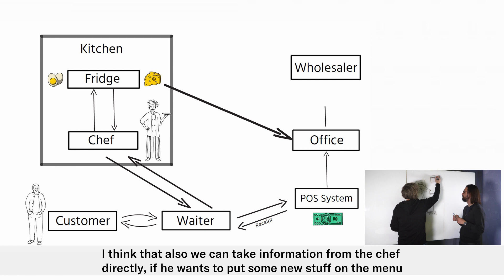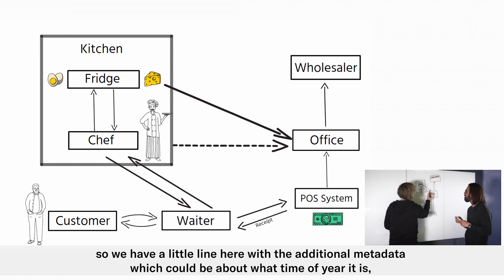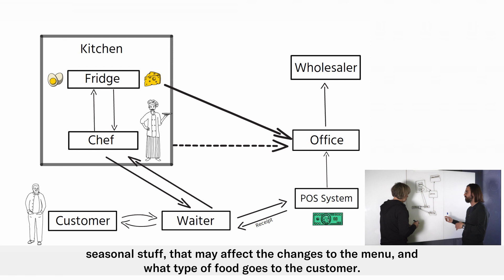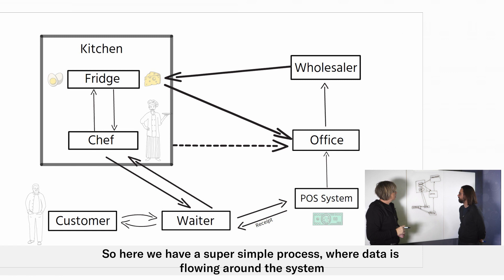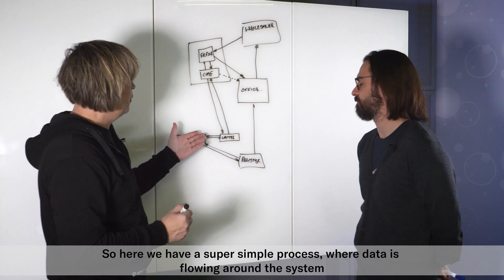And I think that also we can take information from the chef directly if he wants to put some new stuff on the menu. So we have a little line here with additional metadata going around, you know what time of year is it and all that kind of stuff, seasonal stuff that affects putting down the menu and putting it to the customer. So then the wholesaler takes their order and delivers it back to the restaurant where it goes into the storage of the fridge. And here we have a super simple process.